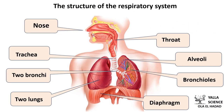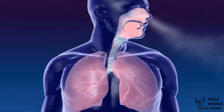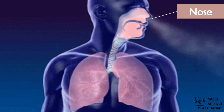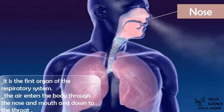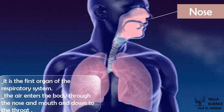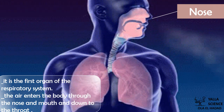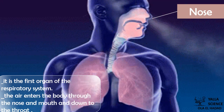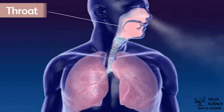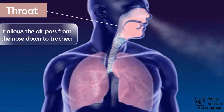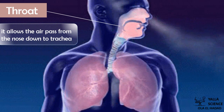The respiratory system consists of a group of organs that work together. These organs start with the nose — it's the first organ of the respiratory system. The air enters the body through the nose and mouth and down to the throat. The throat allows the air to pass from the nose down to the trachea.